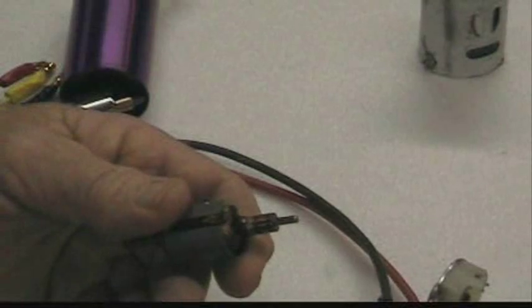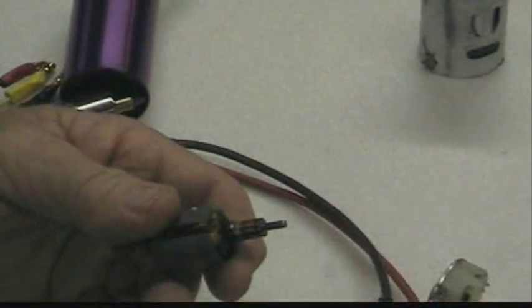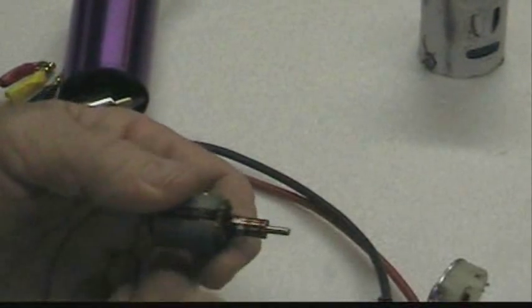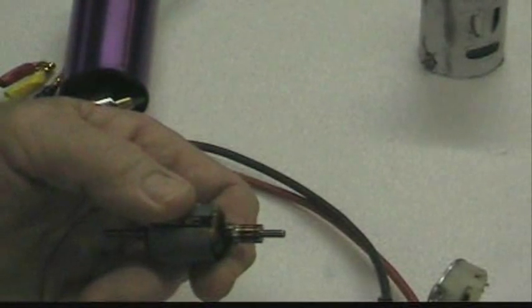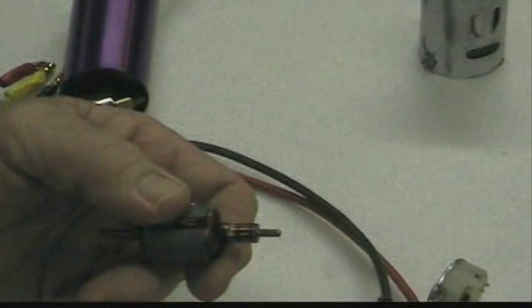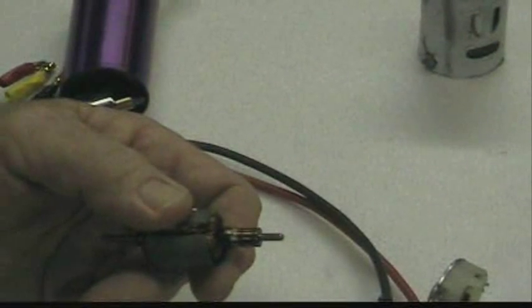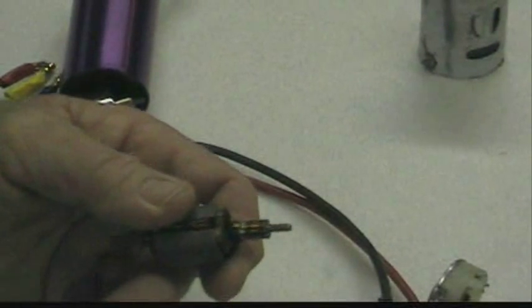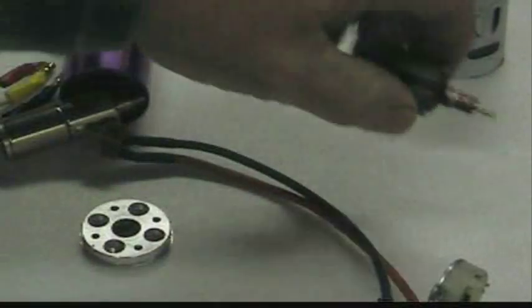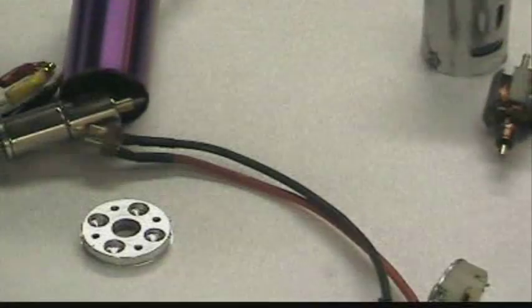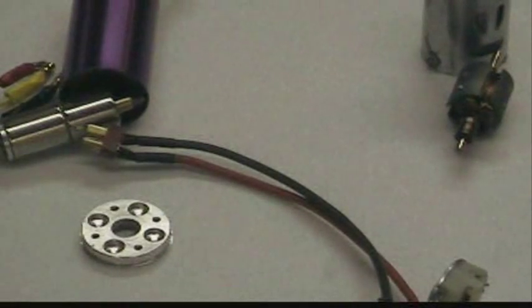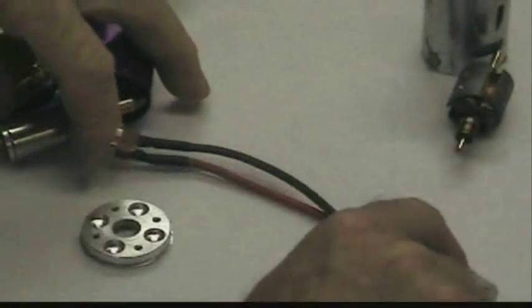And then you had, it was easy to buy a commutator lathe so you could take your end bell off, pull this out, throw it in the lathe and turn down the commutator so it was perfectly flat and shiny and brand new and made perfect contact with the brushes. It was all a big deal. But today, if you're serious about going fast, you're talking about a brushless motor.